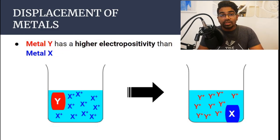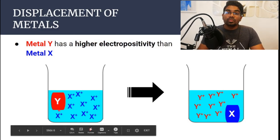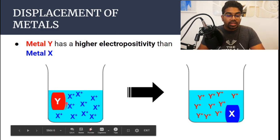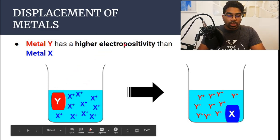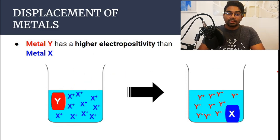Now there is one condition for this to happen. The metal that we add to displace the other metal has to have a higher electropositivity. So metal Y has to be more electropositive than X in order for it to displace X.